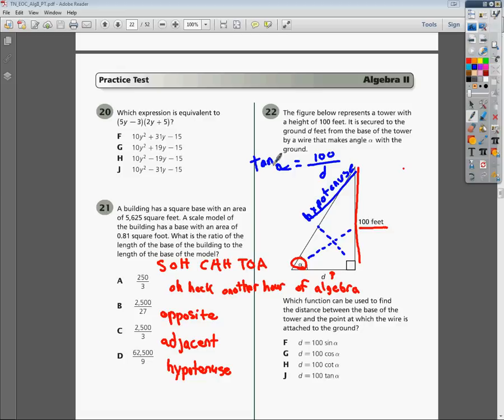So first, you have to multiply both sides by D, which is due to one side of your equation, due to the other, so your D's cancel out on the right, and you now have D times tangent of alpha equals 100.